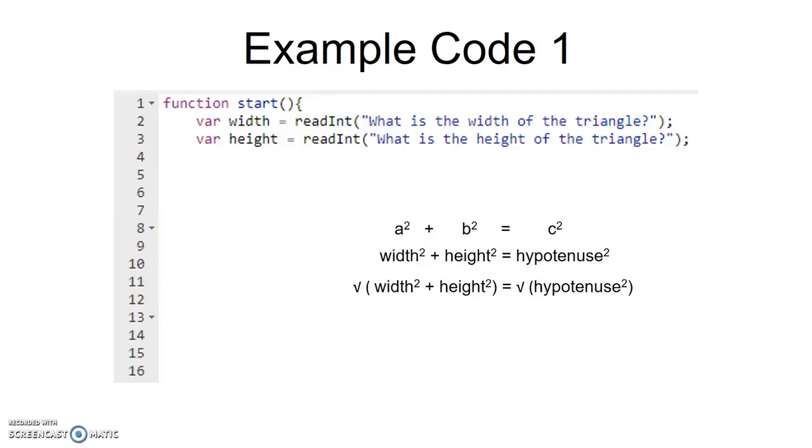If we square root both sides of the equation, you'll see on the right the hypotenuse squared and the square root will cancel out. So our equation to get the hypotenuse from the width and height is square root of the width squared plus the height squared.